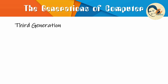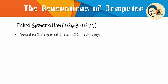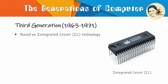Now the third generation of computers. The period 1963 to 1971 was considered roughly as the period of third generation of computers. These computers were based on integrated circuit, i.e. IC technology. In comparison to the second generation, the size of third generation computers was much smaller, consumed less power and also generated less heat.